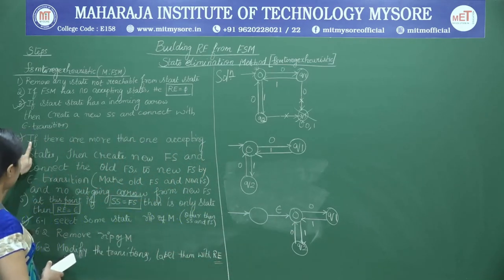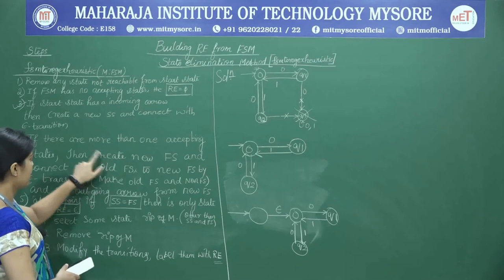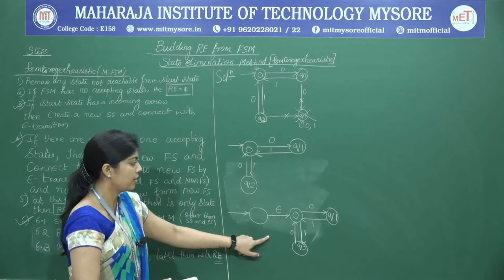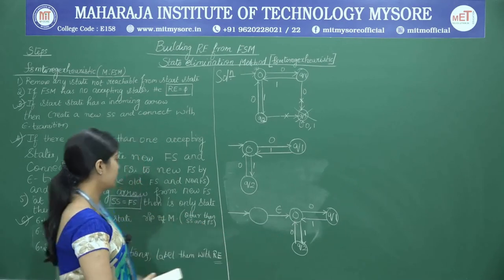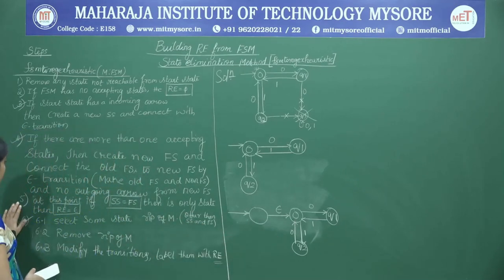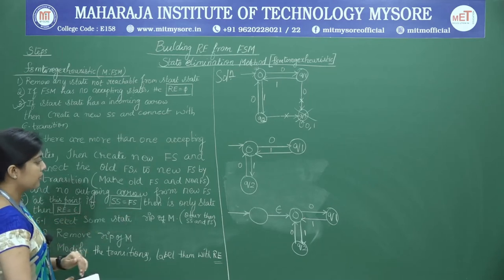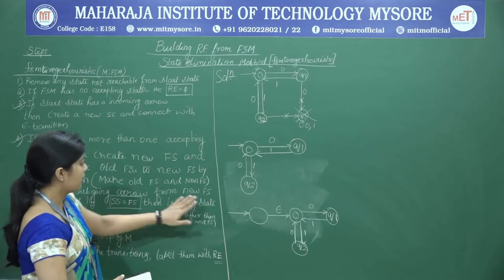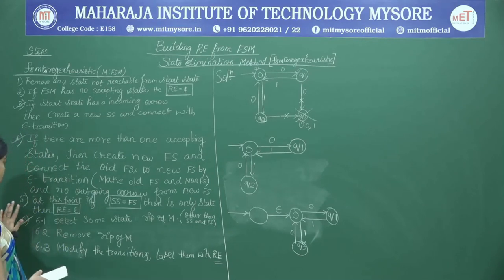After creating the new start state with Q1 and Q2 connected via epsilon, we go to step 4: if there are more than one accepting states. Examining the automata, there is only one accepting state, so step 4 does not apply. Then step 5: we check if the start state equals the final state. The start state is not equal to the final state and there is more than one state, so step 5 also does not apply.